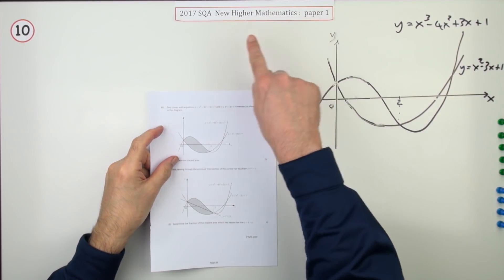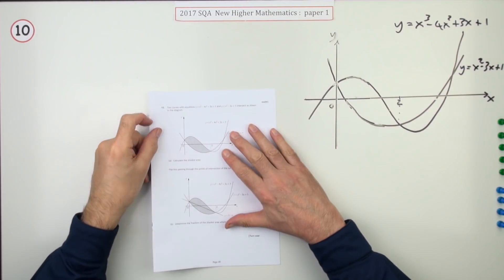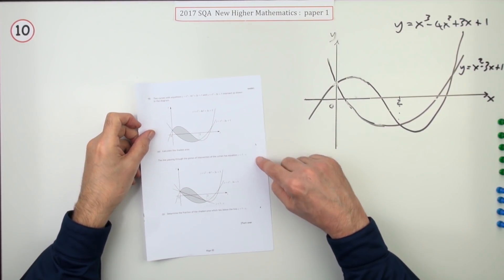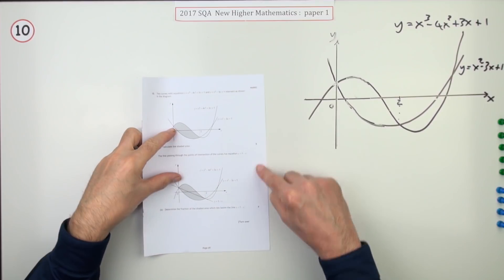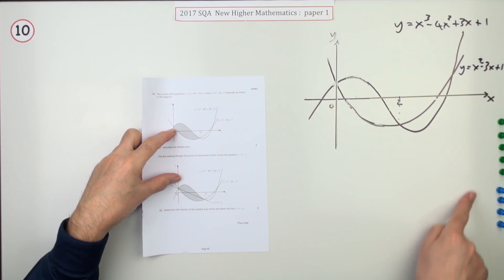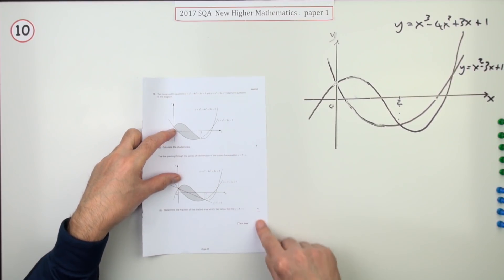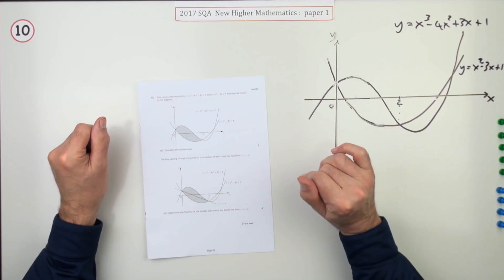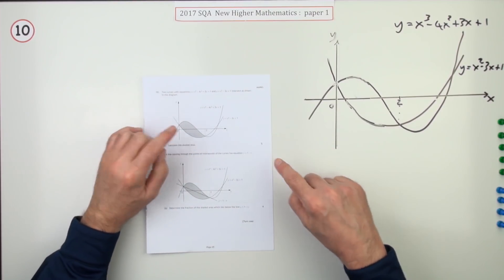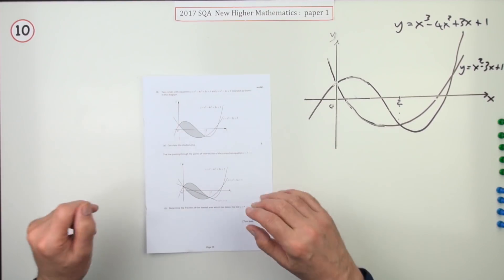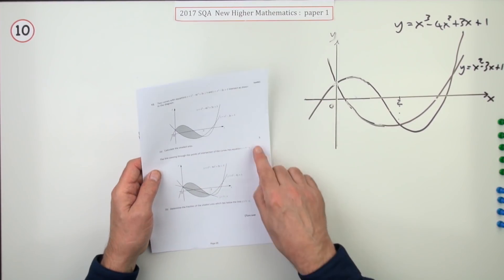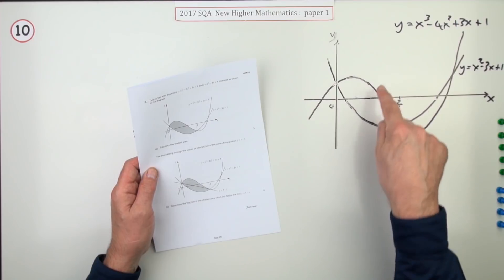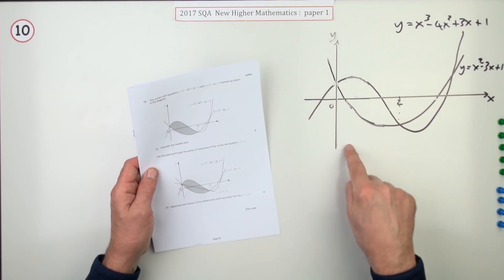Number 10 from paper 1 of the 2017 Higher Maths. Here we go — a bucket load of marks. 9 marks here compared to those little 3-mark questions we were getting before. Area between two curves — you'd recognise it immediately. The first five marks: what's the area between these two curves?